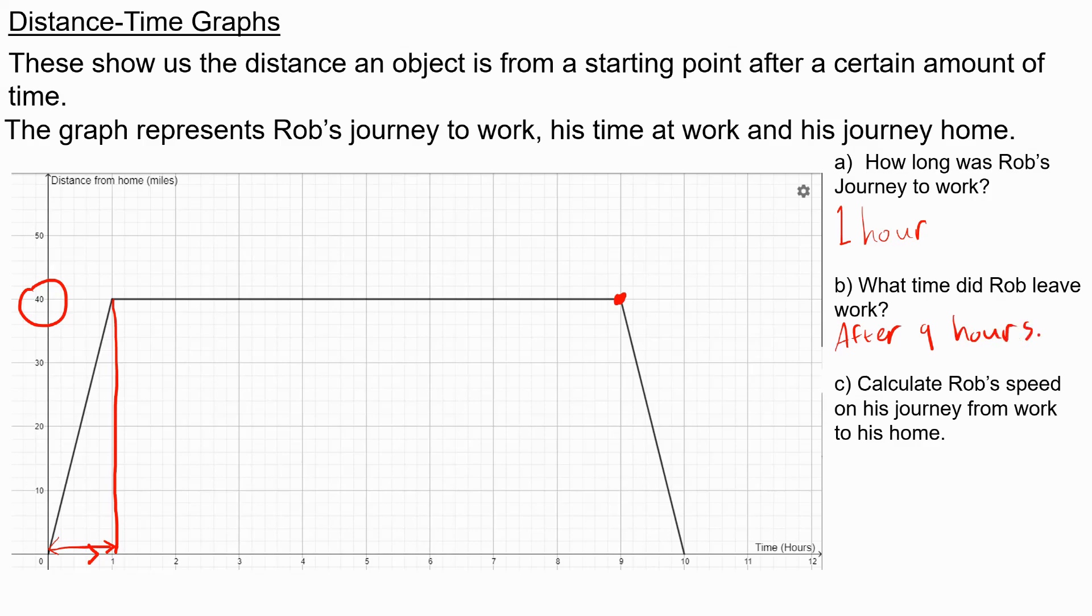If we want to calculate Rob's speed on his journey home from work, we need to remember that speed is equal to distance divided by time. To work out his speed on his journey home, we just need to look at the distance travelled during his journey home, which goes from 40 miles to zero miles over a period of just one hour. So his speed is 40 divided by 1, which is 40 miles per hour.